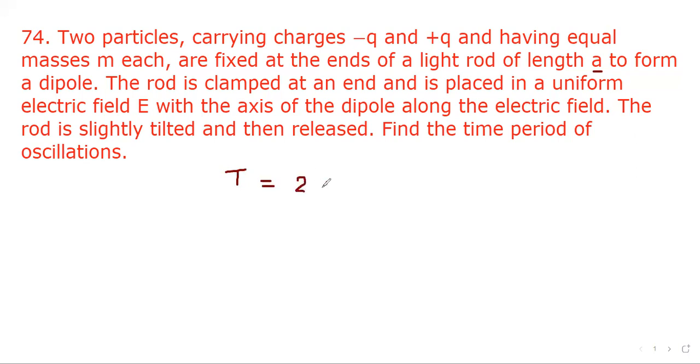Find the time period of oscillations. We know that time period of simple pendulum is given by T equal to 2π root L upon g. Here length is given as a.